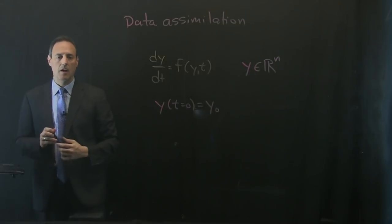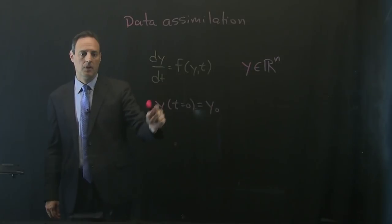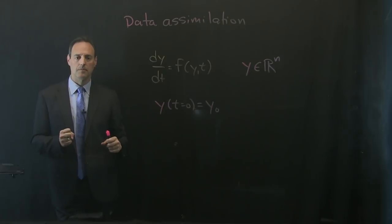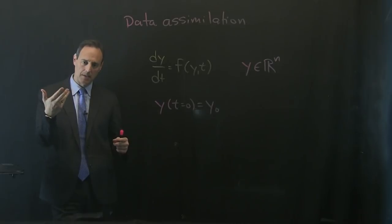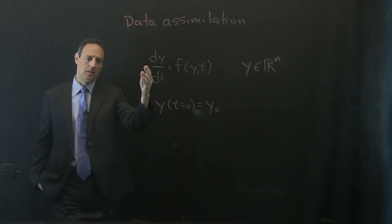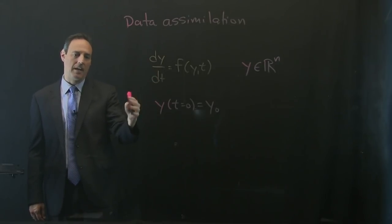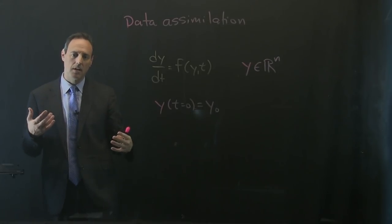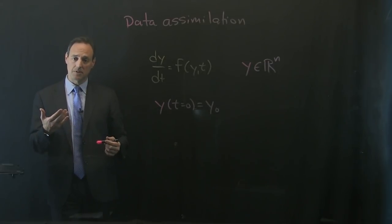What that allows us to do is take the model with initial data and simulate it forward into the future. The key assumption is that to get this trajectory right, you'd need a perfect model with a perfect measurement of the initial data - which is never the generic case. In practice, you never have that.